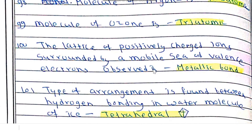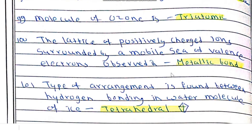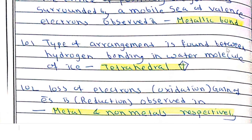A lattice of positively charged ions surrounded by a mobile sea of valence electrons is observed in a metallic bond. The type of arrangement found between hydrogen bonding in water molecules of ice is tetrahedral — in ice, a tetrahedral arrangement is present.